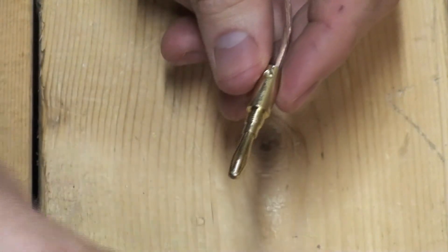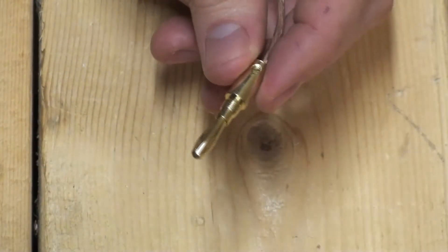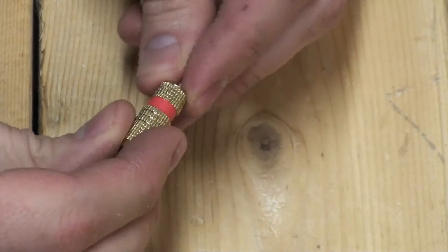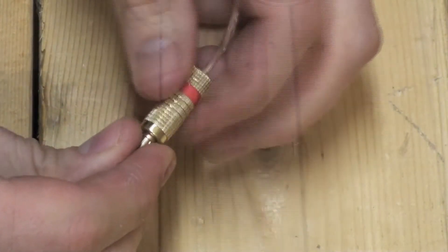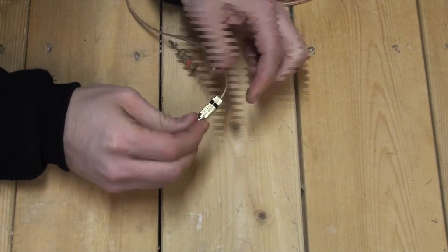Finish by replacing the outer protective casing. Then simply repeat the process for the other lead.